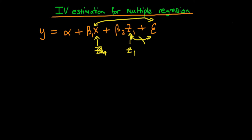So in these circumstances, even though z1 is exogenous, it still requires its own instrument. In this case, the best instrument to use for z1 is just z1 itself, because z1 is obviously correlated with z1 and z1 is not correlated with the error term. So in multiple regression situations, we actually require another instrument which doesn't appear in the equation of interest — we're going to call it z2.